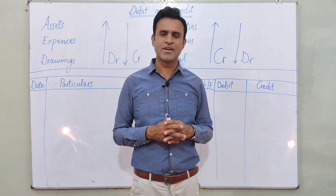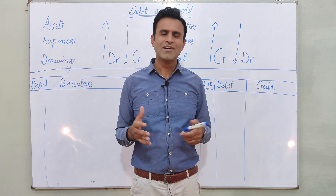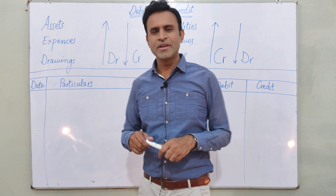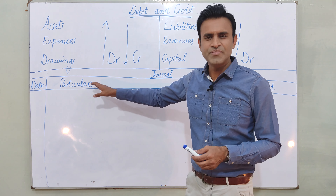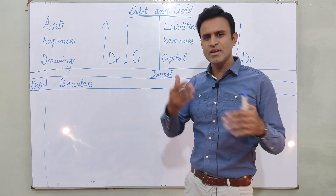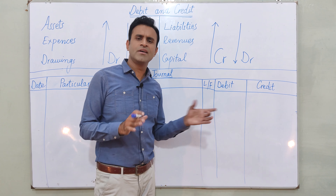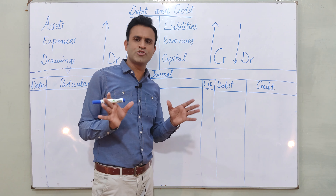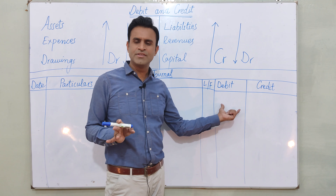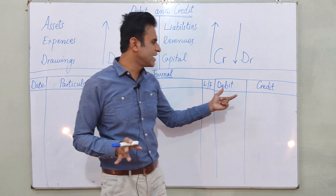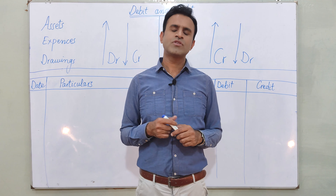This is our journal. The format of the journal has a date column, a particulars or description column where you write details, then LF — Ledger Folio — which is a reference column you can leave blank, and then a debit amount column and a credit amount column.